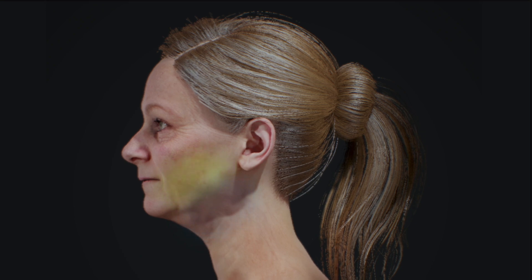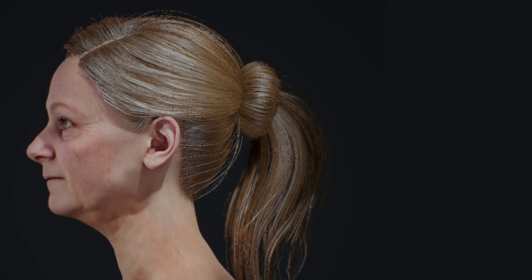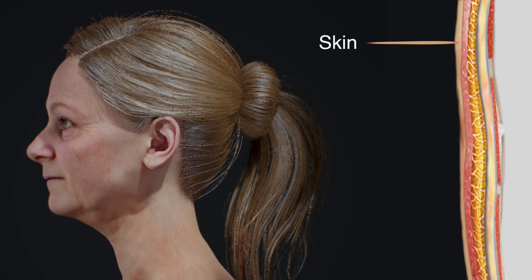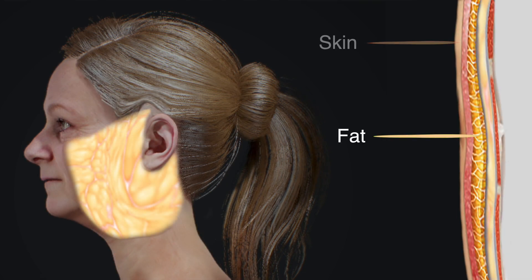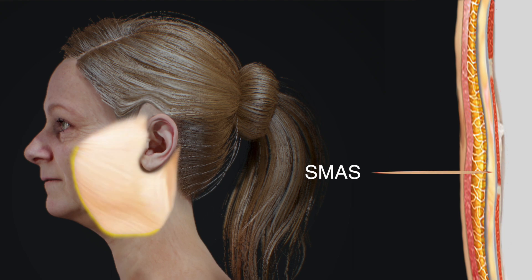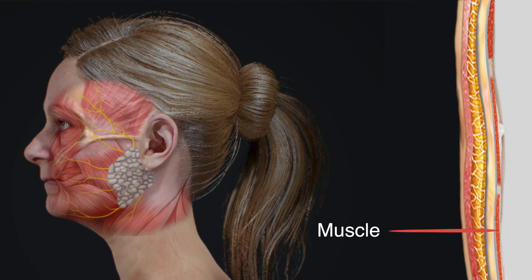When it comes to facelifts, intimate knowledge of the different layers of the facial skin is essential. Immediately below the skin is the subcutaneous fat, which provides volume and smoothness to the facial contour. Next is a thin fibrous layer known as the SMAS, which stands for superficial muscular aponeurotic system — a key facial support structure that the overlying skin rests on. Finally, the underlying salivary gland, muscles, and nerves are present.